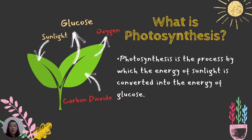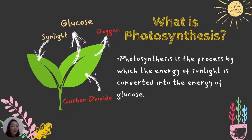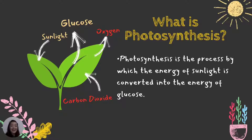What is photosynthesis? Photosynthesis is the process by which the energy of sunlight is converted into the energy of glucose. Sunlight is important. We have the leaf of the plant — sunlight or sun energy goes inside the plant, and carbon dioxide from the air also goes inside the plant.